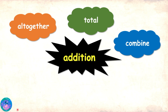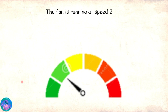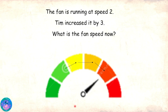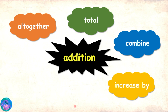Well done. Let us see another one. The fan is running at speed 2 — look over here, 1, 2 — that is where this arrow is pointing. Tim increases it by 3: 1, 2, 3. What is the fan speed now? In this case, the words 'increase by' tell us that we need to add 3 to the speed 2. So, we have one more keyword for addition: 'increase by.'